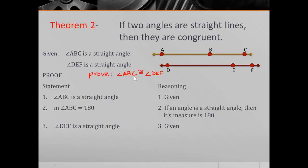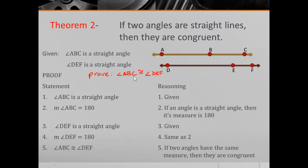Statement three: angle DEF is a straight angle, that's given. Statement four: the measure of angle DEF equals 180, for the same reason we used in step two. And finally, angle ABC is congruent to angle DEF, because if two angles have the same measure, then they are congruent — we're looking at the definition of congruence here. Remember, definitions are reversible, so if you ever needed to, you could flip-flop that.